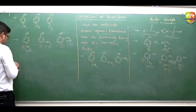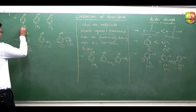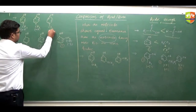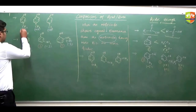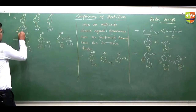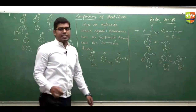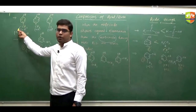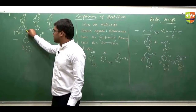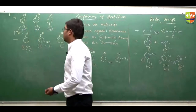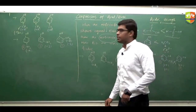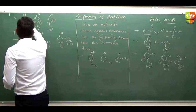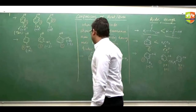For CH₃ and CT₃, the effect is plus H. Plus H is maximum for CH₃. If you remember, CT₃ shows maximum plus I effect because of least bond strength — its hyperconjugative tendency is maximum. So CT₃ has maximum plus H, and because of plus H, acidity decreases. So the order of acidity: this will be 1, this will be 2, and this will be 3.